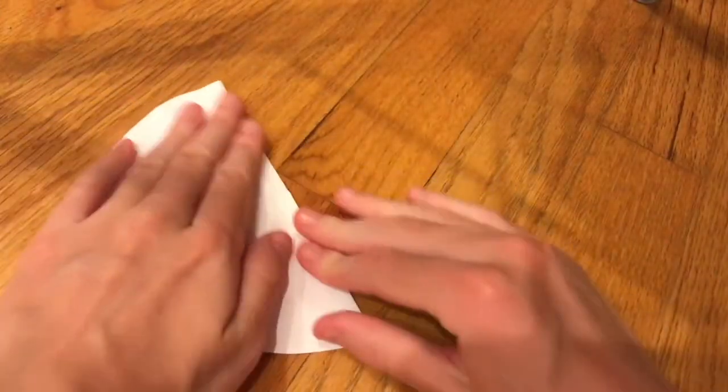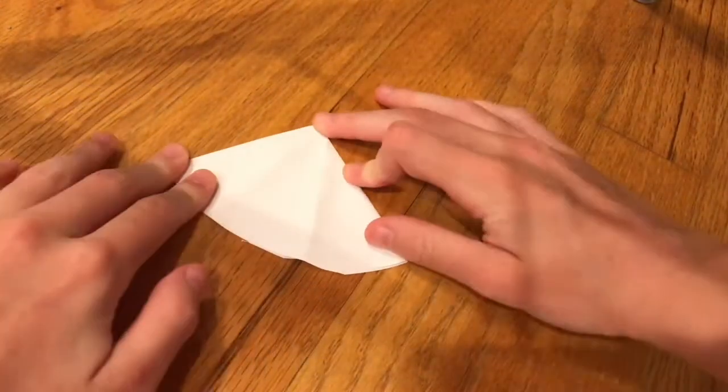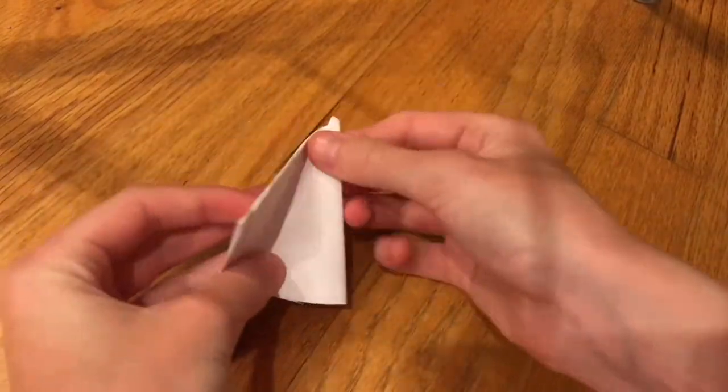If you're using coffee filters, fold them according to the following steps. Fold it directly in half so that it becomes a semicircle. Then fold the semicircle in half. Next, fold it into thirds.